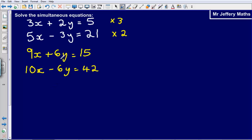Now as you can see I have got 6y, I have got plus 6y and minus 6y. So what I can now do is I can either add or subtract the equations from each other to cancel out the y term.